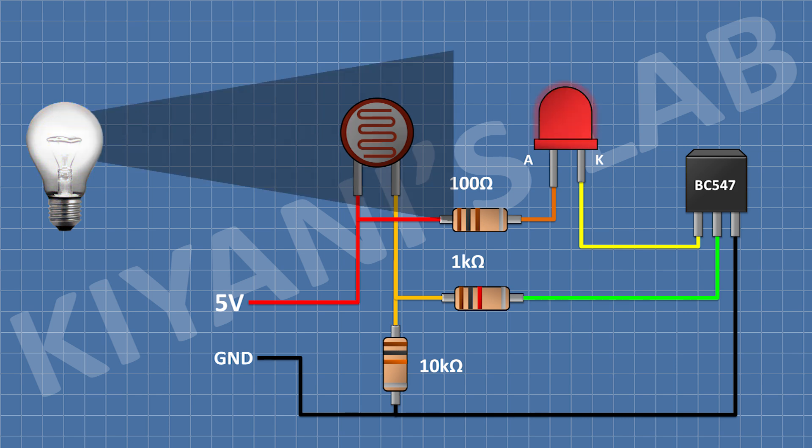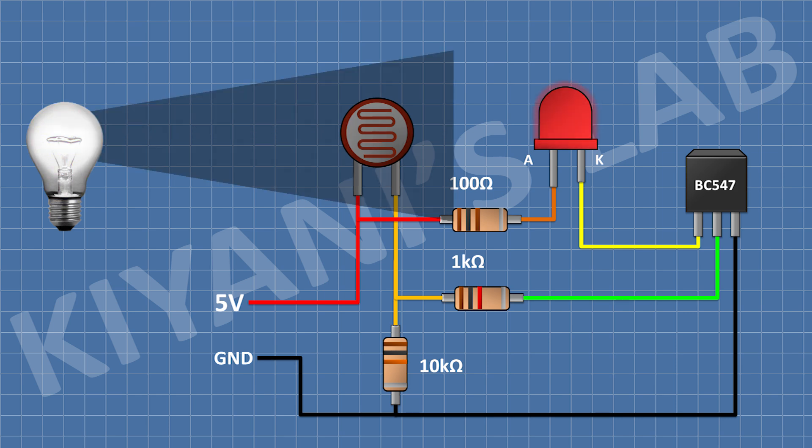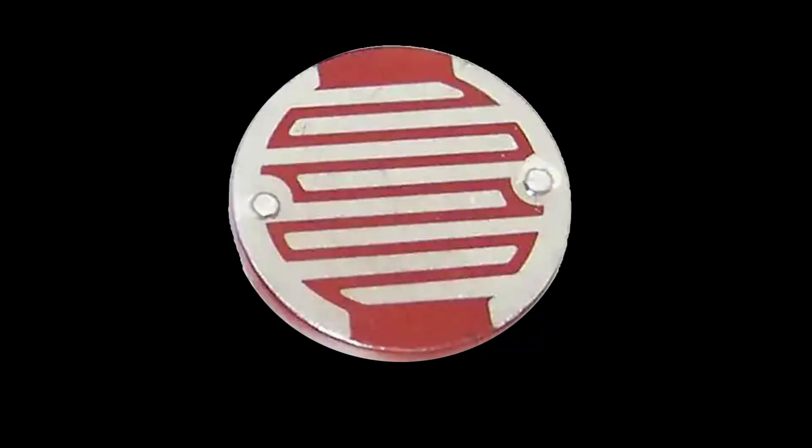While LDRs are super useful, they do have their limitations. For one, they are not super fast. Their response time to changing light conditions is relatively slow. Also, their performance can degrade over time, especially with prolonged exposure to light.